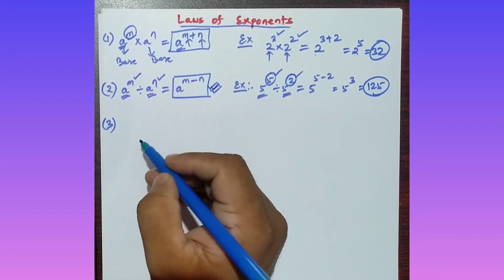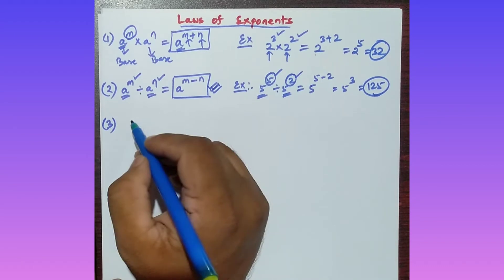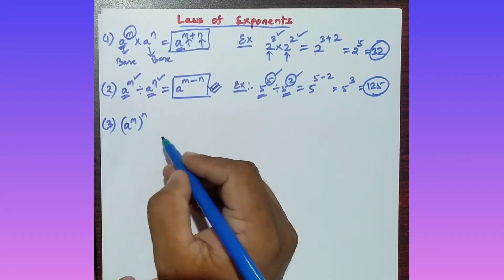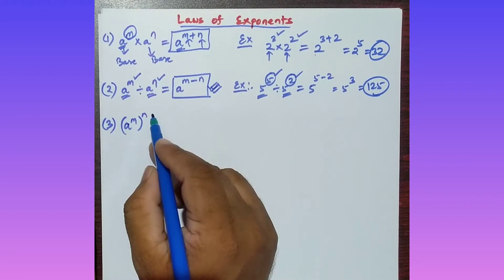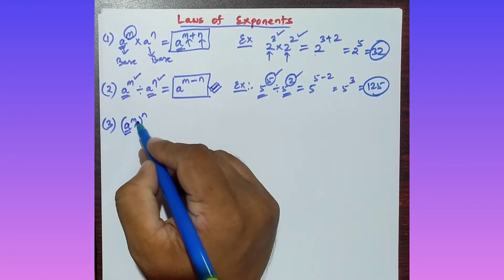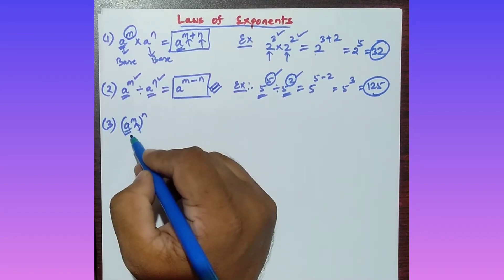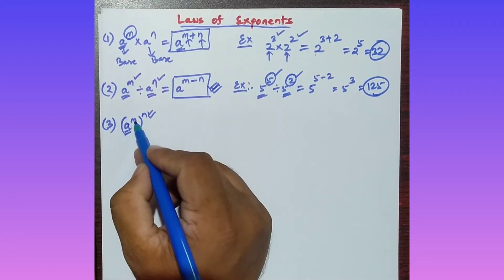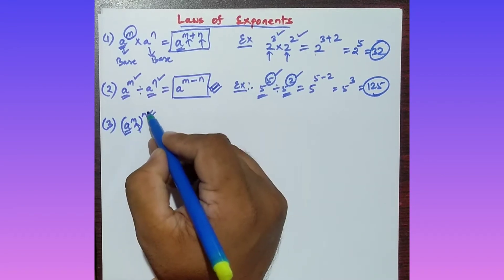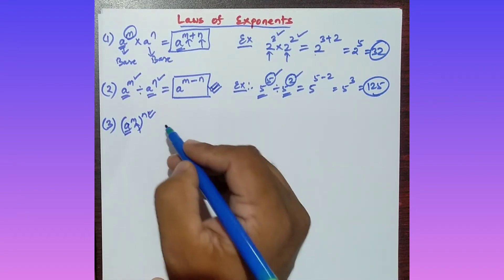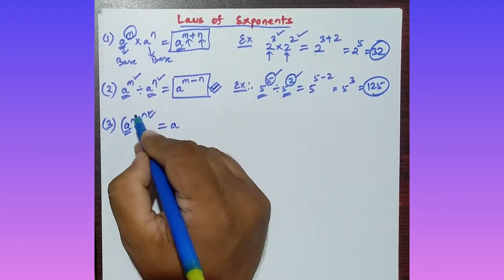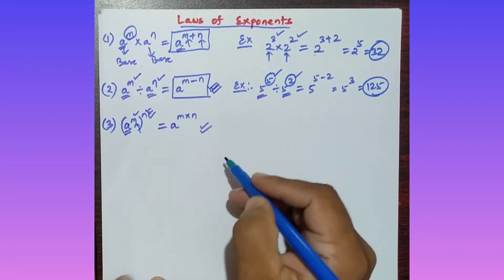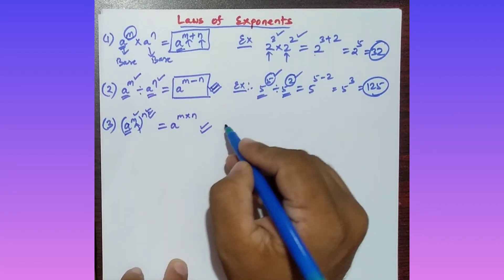Now the third property. Suppose I write a to the power m, whole to the power n. Here, a is the base, m is the power of base a, and n is the whole power. The formula to apply is: you keep the base and simply multiply the two powers together — that is, a to the power m times n.